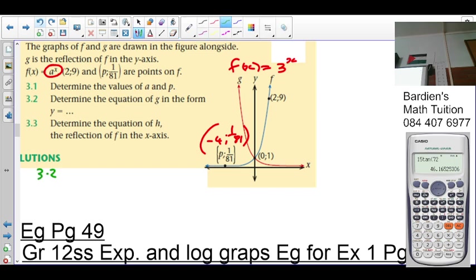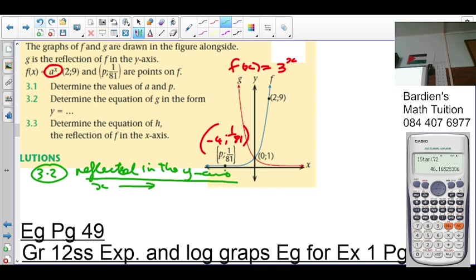We've got number 2. Determine the equation of g in the form y equals. Remember, we said if something is reflected in the y-axis, what's the rule? X becomes negative. Now, f of x equation now is 3 to the x. So I say now y equals 3 to the minus x, or it's going to be 1 over 3 raised to the x. Both is acceptable. You get the full marks. So that's the equation of g.